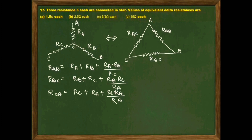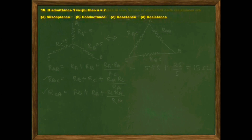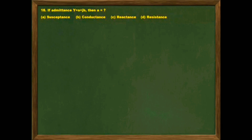This is a basic question from network conversion — star network to delta network. Here Ra = Rb = Rc = 5 ohm, and we need to find Rab = Rbc = Rca. Using the standard formula: Rab = Ra + Rb + (Ra×Rb)/Rc = 5 + 5 + 25/5 = 15 ohm. So the answer is option D — 15 ohm.